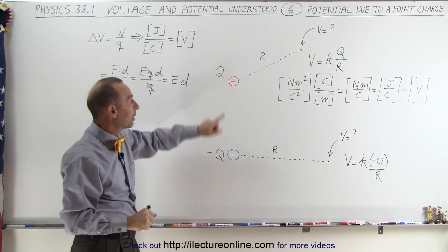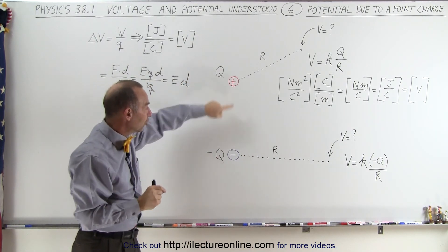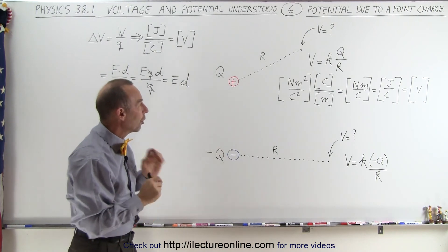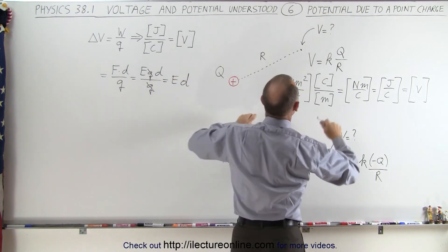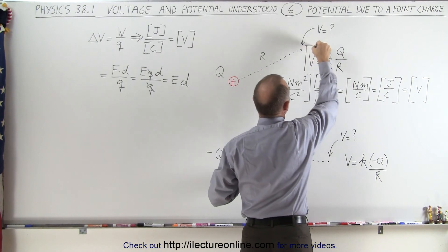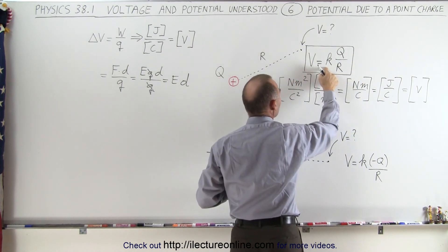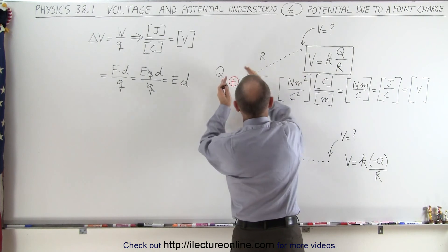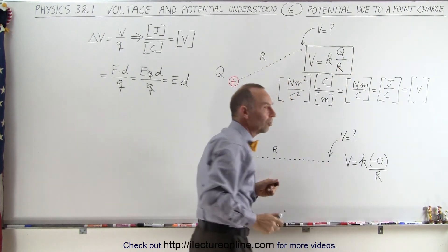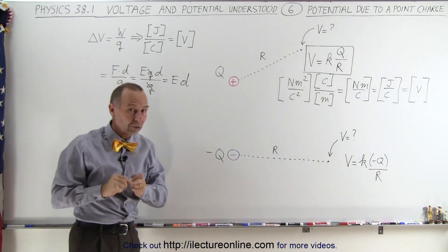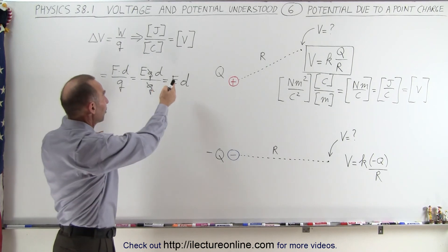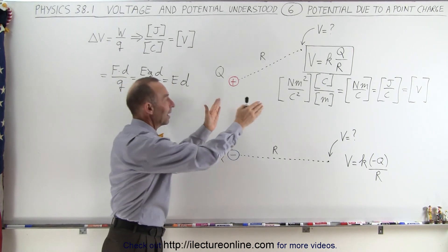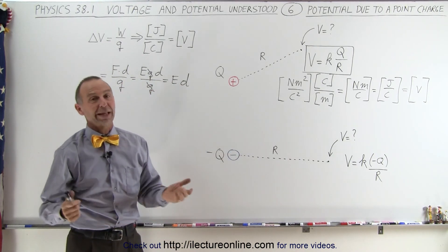And if you have a point charge, either a positive or negative point charge, we use a very different equation. We use the equation that the potential at some distance away is equal to K, the constant, times Q, which is the size of the charge, divided by the distance away from that charge. So make sure that you remember that this is for uniform electric fields, and that is for point charges. That's how it's done.